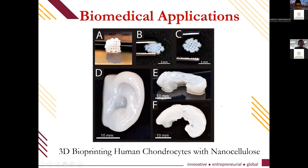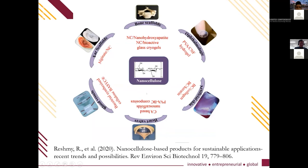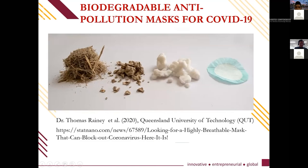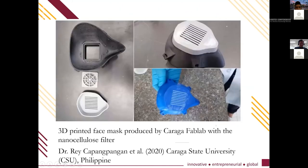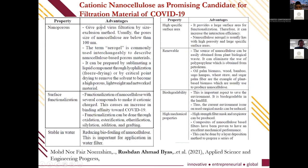Nanocellulose is also used in biomedical applications such as 3D bioprinting of human chondrocytes with nanocellulose, blood vessel scaffolds, ear scaffolds, bone scaffolds, ophthalmic applications, artificial skin, and heart valves. A biodegradable anti-pollution mask for COVID-19 and a 3D-printed face mask produced by Caraga were also highlighted. Lignocellulose nanocellulose has been studied as a promising candidate for filtration of COVID-19, and we published related work in Applied Science and Engineering Progress covering experiments on using nanocellulose for face masks.